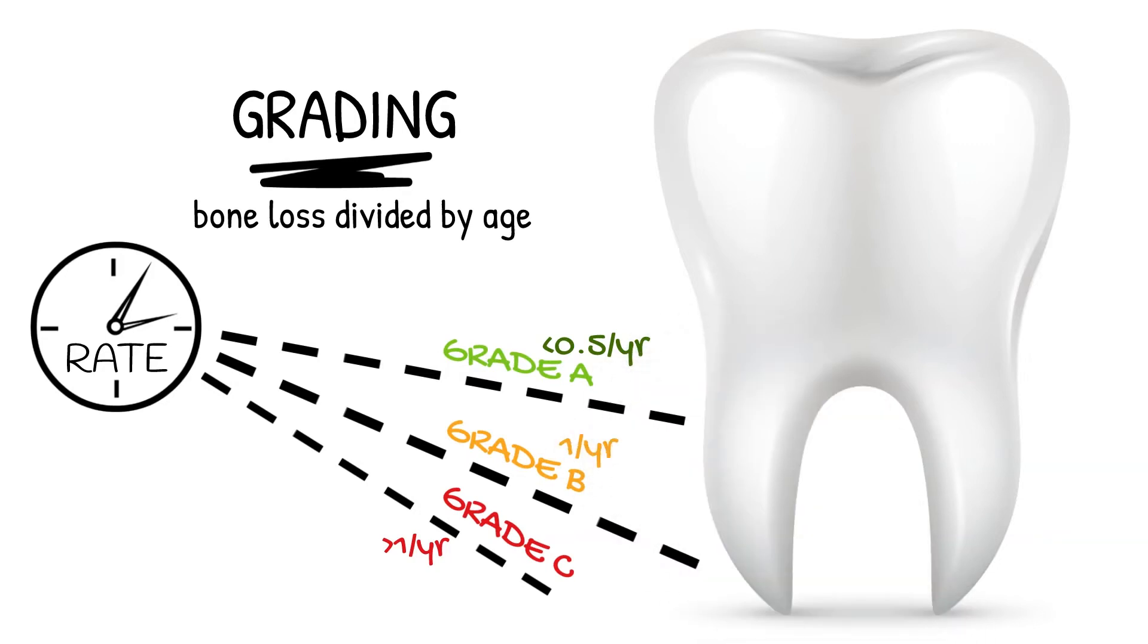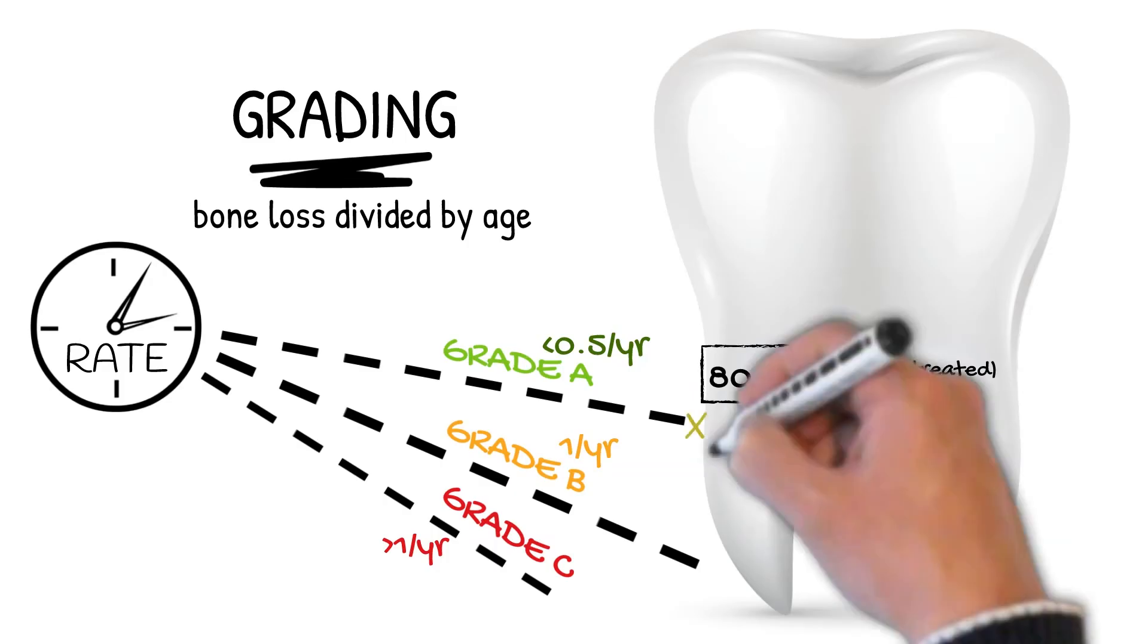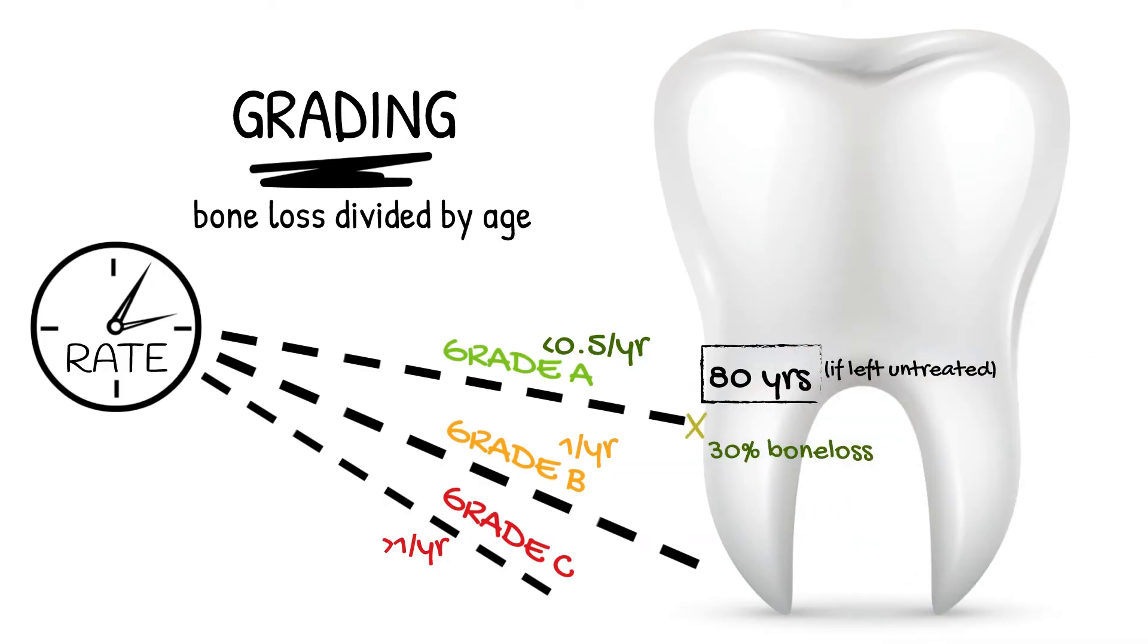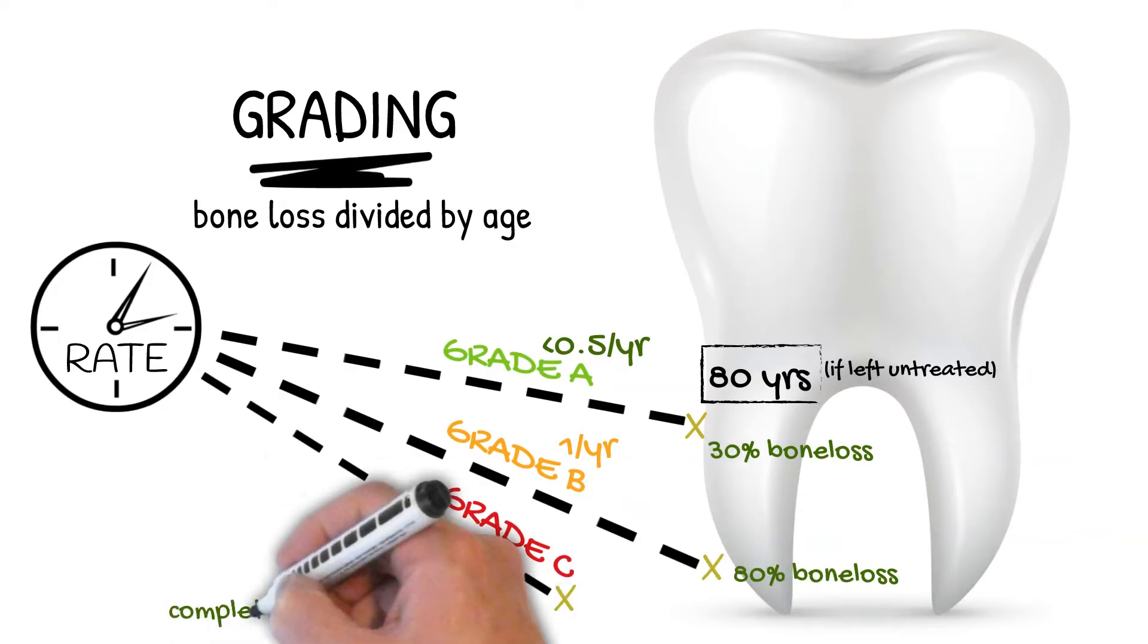To put this in the context of time: someone with grade A bone loss can expect to lose about 30% of bone by the time they are 80. Someone with grade B will lose up to 80% by the time they are 80. And someone with grade C is likely to lose their teeth in their 50s or 60s, or even sooner.